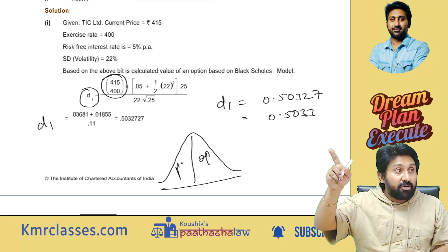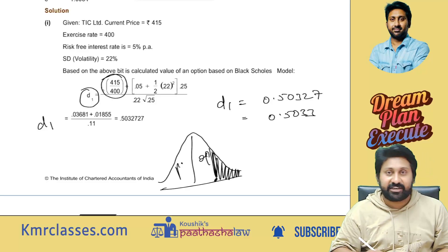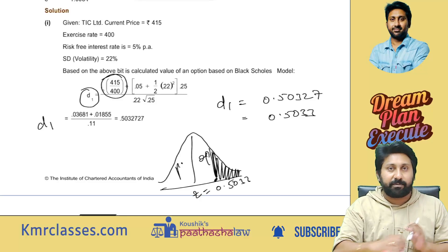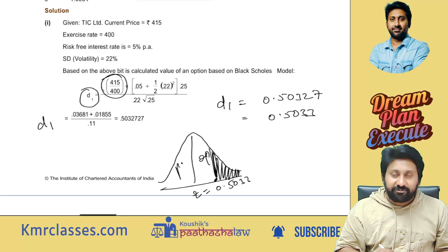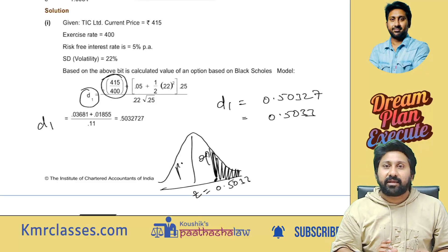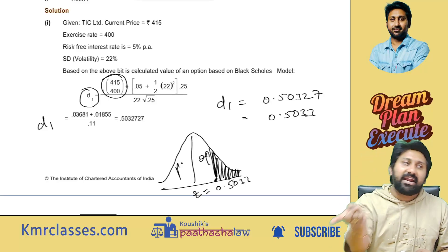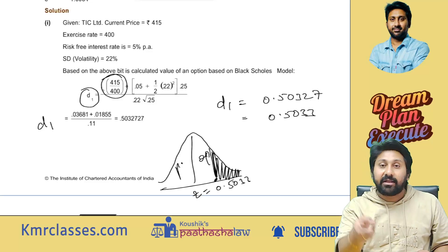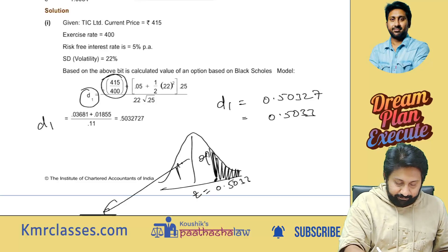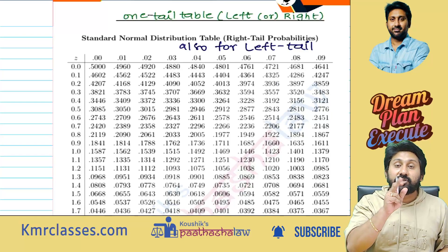For a Z-value of 0.5033, you look up this region in the table. Now, which table should we go to? Always in Black-Scholes, blindly believe one thing: you have to take the one-tail table. For D1, you read the right-side value; for D2, you read the left-side value. So we want 0.5033. In the table, since we only have two decimals, we take 0.50.